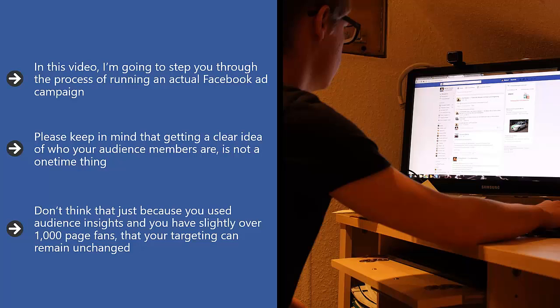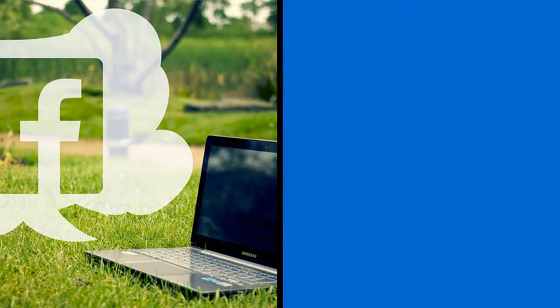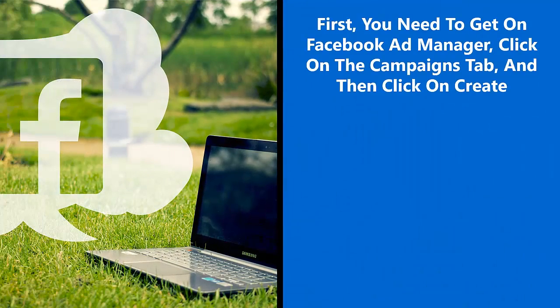In this video I'm going to step you through the process of using Facebook Ad Manager to set up an actual ad campaign. First, you need to get on Facebook Ad Manager, click on the Campaigns tab, and then click on Create. This will get you going on launching a new Facebook advertising campaign. The first thing you will notice is that you actually have 11 different campaign objectives to choose from.